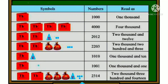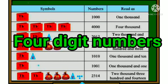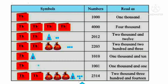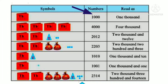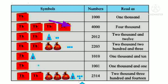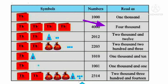Now see this chart — four-digit numbers. Here symbols are given, the next column shows numbers and how to read them. This is the symbol of one thousand. Now see — one thousand, one thousand, one thousand, one thousand — this is four thousand. How to read: four thousand.